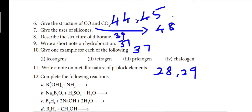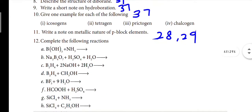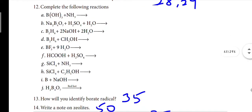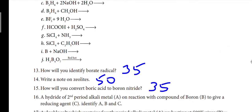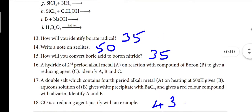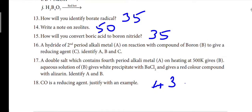The tenth and eleventh questions will have new answers given at the video end. Eleventh question: page 28 and 29. Twelfth question: answer at video end. Thirteenth question: how will you identify borate radical — page 35. Zeolites — page 50. How will you convert boric acid to boron nitrate — fifteenth question, page 35. Sixteenth and seventeenth: answers at the end. Eighteenth: page 43.